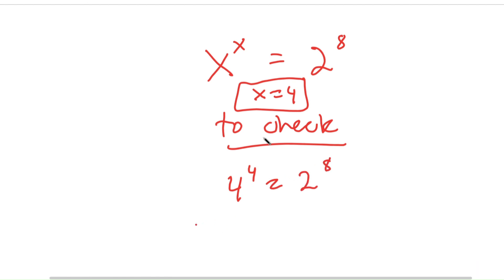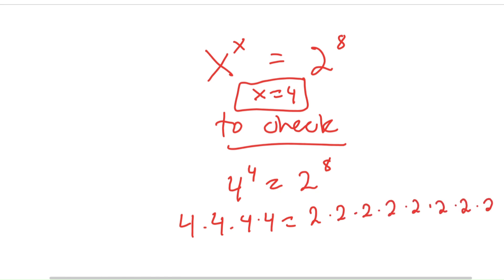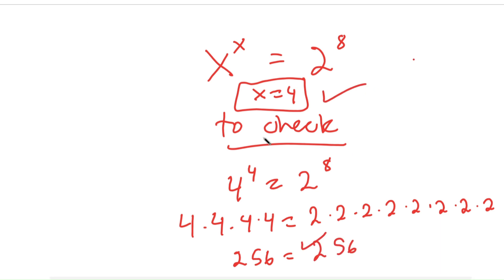4 to the power of 4 is 4 times 4 times 4 times 4. 2 to the power of 8 is 2 times 2 times 2 times 2 times 2 times 2 times 2 times 2. 4 times 4 is 16, 16 times 4 is 64, and 64 times 4 is 256. 2 times 2 is 4, times 2 is 8, times 2 is 16, times 2 is 32, times 2 is 64, times 2 is 128, times 2 is 256. So these two are equal to each other, meaning our solution is correct.